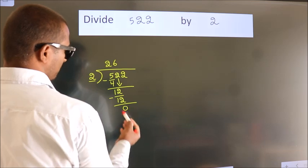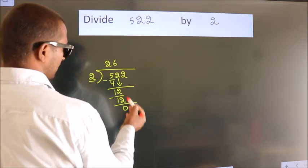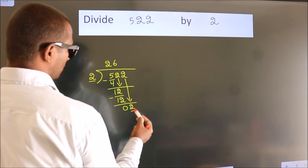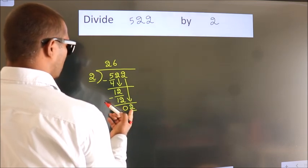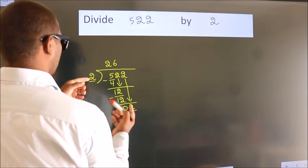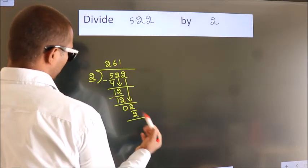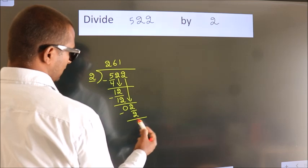After this, bring down the beside number. So 2 down, so 2. When do we get 2 in 2 table? 2 times 1 equals 2. Now we subtract, we get 0.